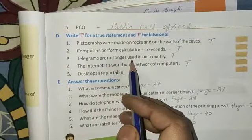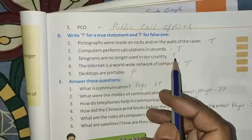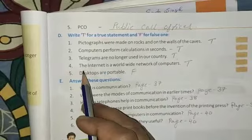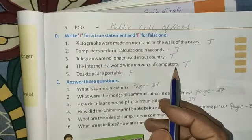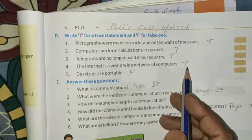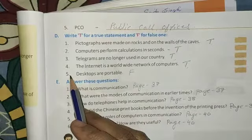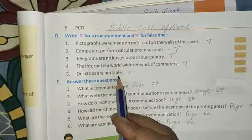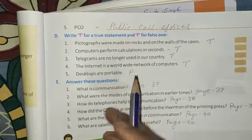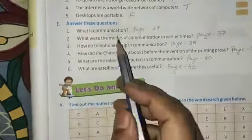Number 3, telegrams are no longer used in our country, that is also true. Number 4, the internet is a worldwide network of computers, that is also true. Now next is number 5, desktops are portable, this is false. Now come to the answer these questions.